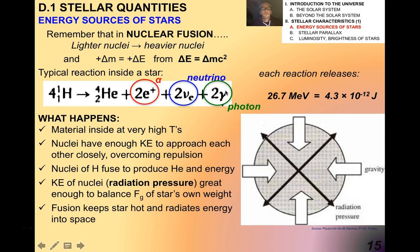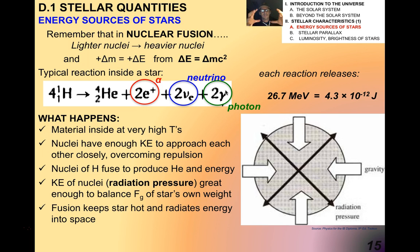Now, very quickly — I'll get more into what happens inside stars later — but here's what happens. You have material inside of a star at very, very high temperatures. The temperatures are so high that the nuclei have enough kinetic energy to approach each other, overcoming electrostatic repulsion. The nuclei of the hydrogen fuse to produce helium, and in the process they produce energy through fusion. The kinetic energy of the nuclei, referred to as radiation pressure, ends up being great enough pushing outwards to balance the gravitational force of the star's own weight.